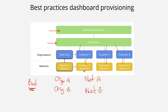Once you log out and log back in again, you will see that now you have a user interface to pick between two organizations. When you log into the Meraki dashboard account and you have more than one organization, your MSP portal is created. If you pick Organization A you will see Network A; if you pick Organization B you will see Network B, and you will have a new dropdown to toggle between organizations and networks.